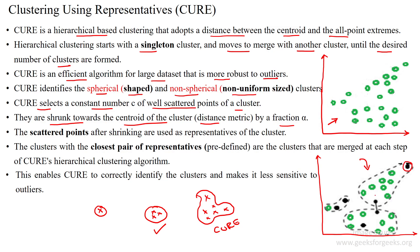Here, multiple data points are selected from the given dataset as reference points. These selected data points then move towards the centroid of the cluster. The closest pair of data points are selected as reference points. These dark-colored cluster points are called representatives of the cluster.